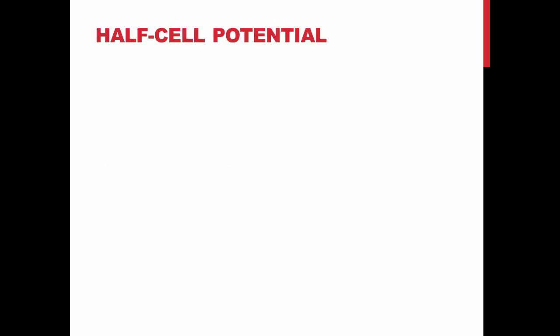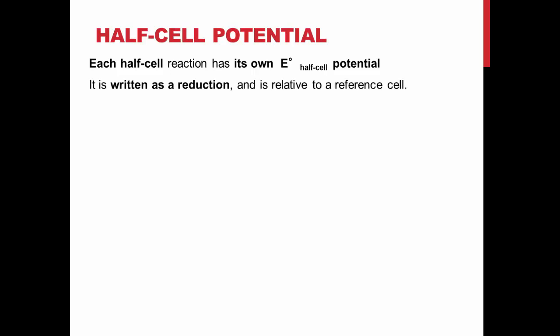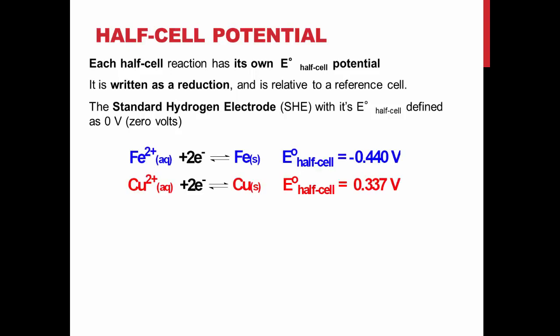Each half-cell produces its own potential, which is measured relative to a reference cell. The reference used is the standard hydrogen electrode, which has a defined potential. When looking at the potential for a cell, the reaction occurring in that cell is written as a reduction. When the voltages for the two half-cells are compared, the one with the highest voltage is defined as the cathode, where reduction occurs.